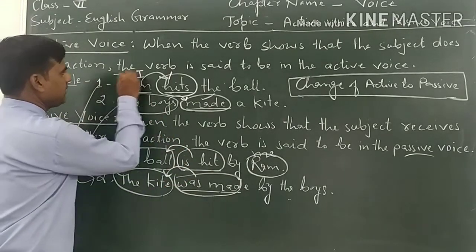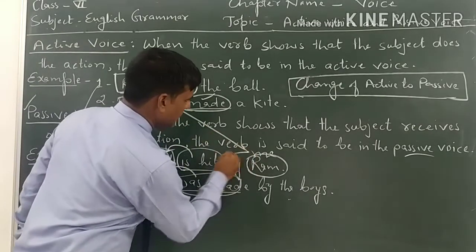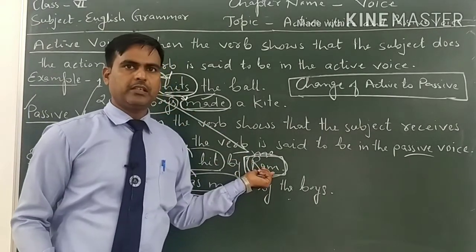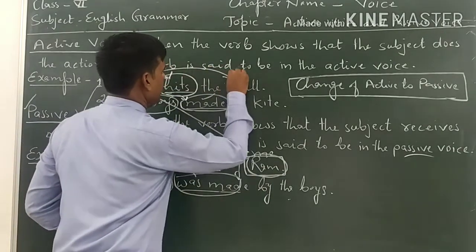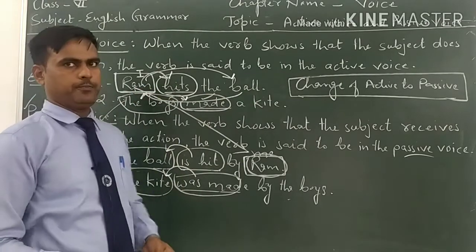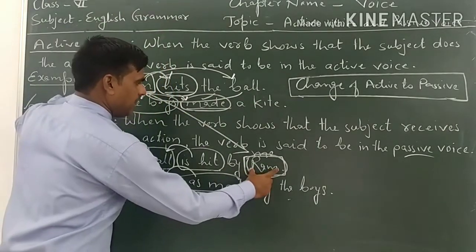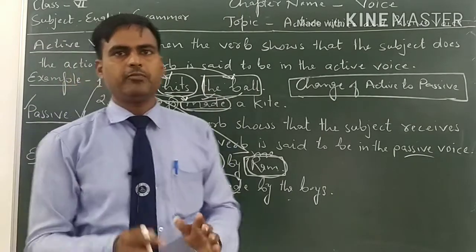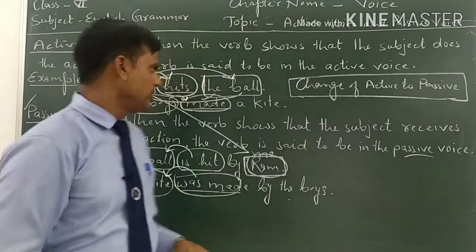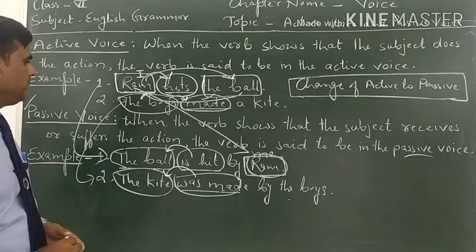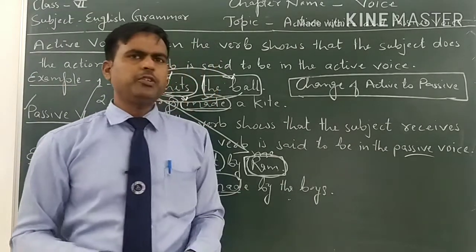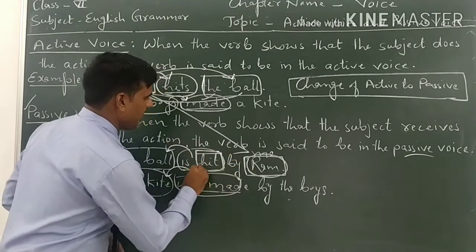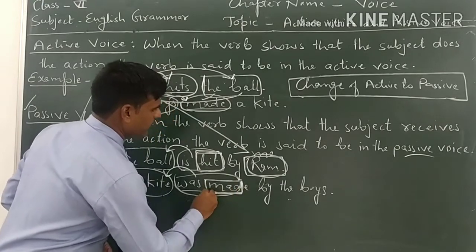The subject of the active voice changes with the object of the passive voice — subject and object replace each other's places. That is why in the example, the object takes the place of subject. Also, in passive voice we always use the third form, or past participial form, of the main verb.